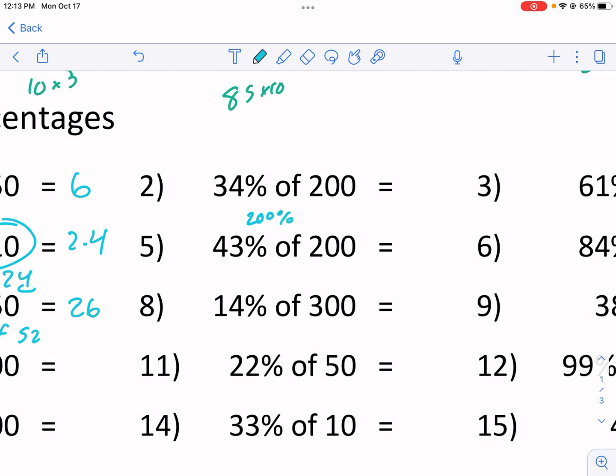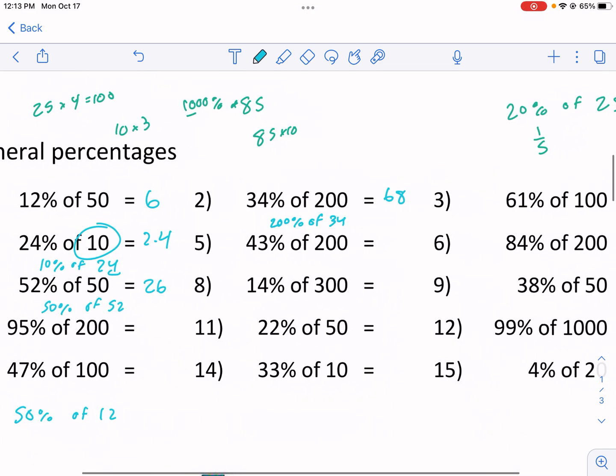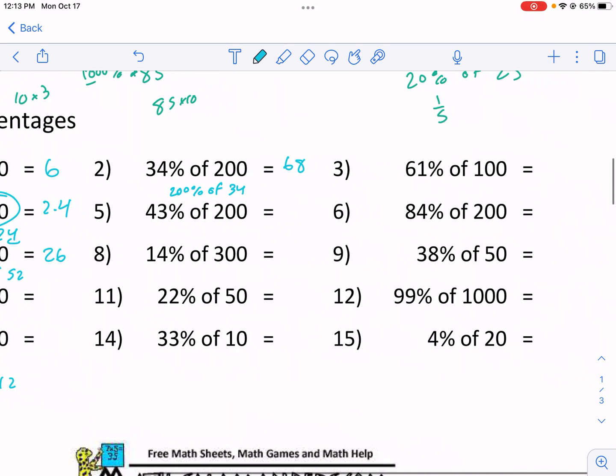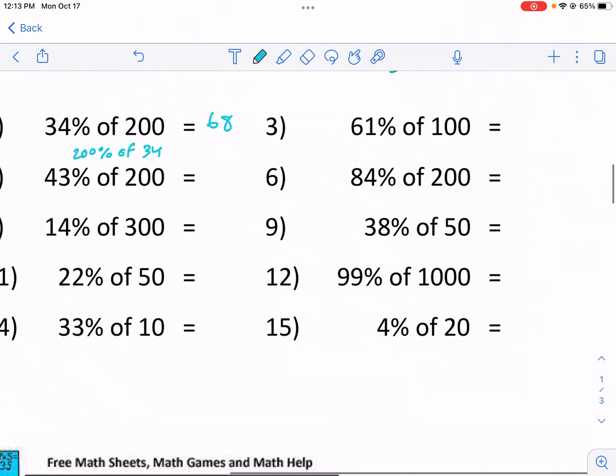200% of 34, guess what? Multiply by 2, that's going to give me 68. So that's how you would do this section. At least that's how I would do it. And you're going to be kind of living the dream here.